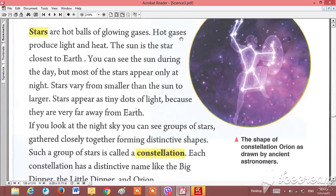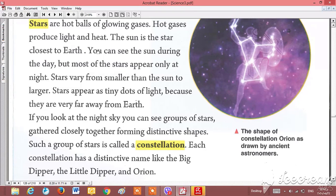These hot gases produce light and heat. You can see the stars very clearly in the night because of the gases that make light and heat. The sun is the star closest to Earth.